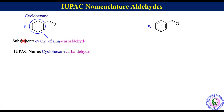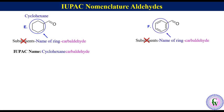Compound F — the IUPAC name consists of substituent name of ring and 'carbaldehyde'. In this molecule too there is no substituent. The name of the ring is benzene.